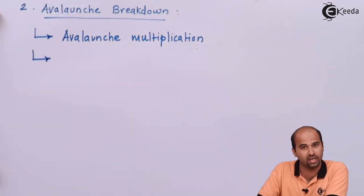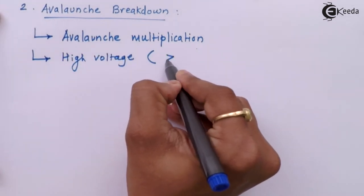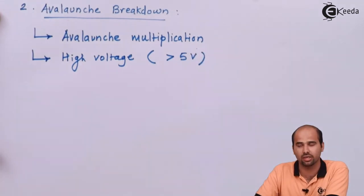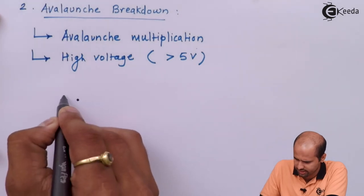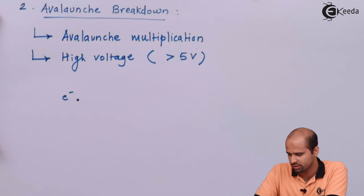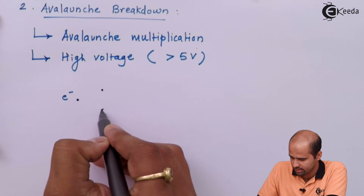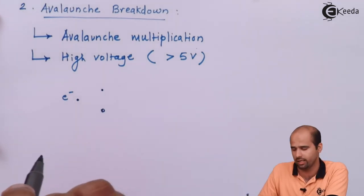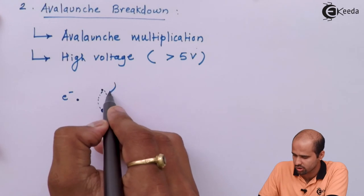Avalanche breakdown occurs for high voltage, generally greater than 5 volts. Without drawing the PN junction structure, we will understand the phenomena of avalanche breakdown. Let us consider that this electron is present on the P side of the PN junction diode. If this electron gets sufficient amount of energy to break the covalent bond, what will happen? These two are covalent bonds — this is a hole and this is an electron, and these electrons are sharing in what is called a covalent bond.